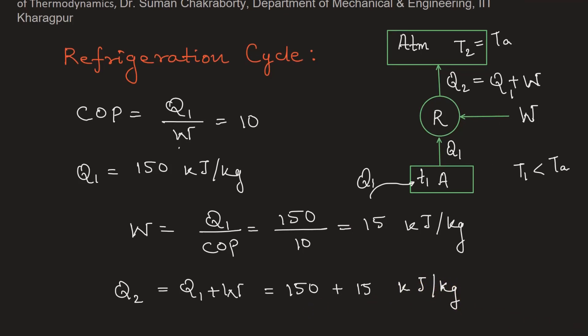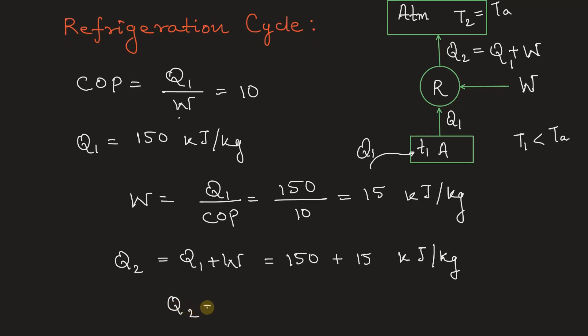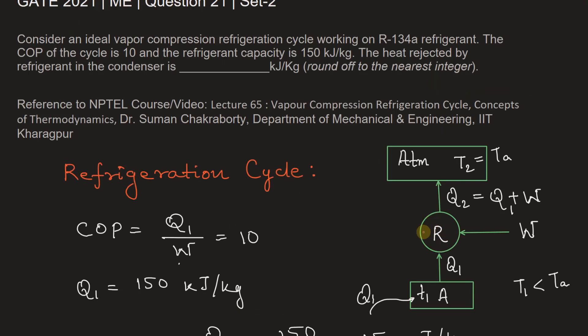This will come out to be Q2 equals 165 kilojoule per kilogram, and this is our final answer. So the heat rejected by this refrigerant in the atmosphere, that is Q2, will be equal to 165 kilojoule per kilogram.